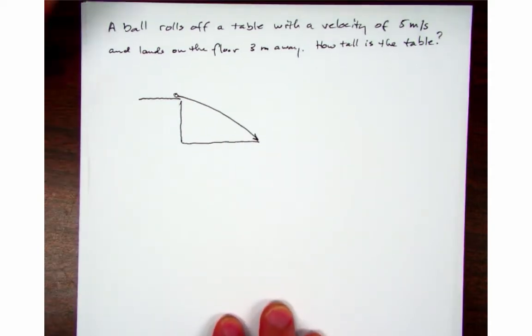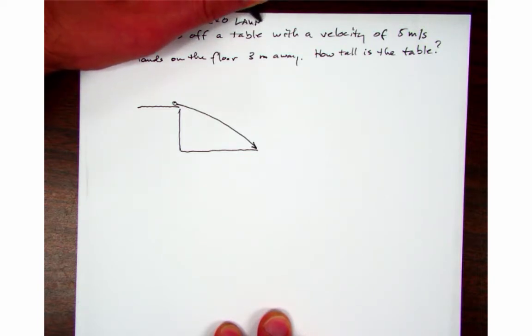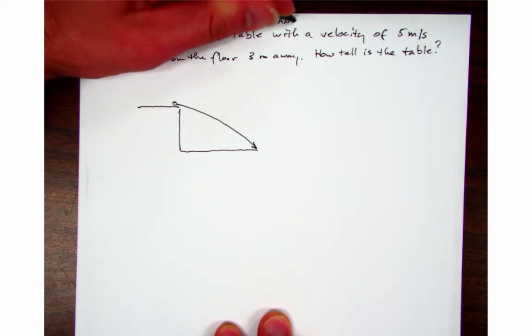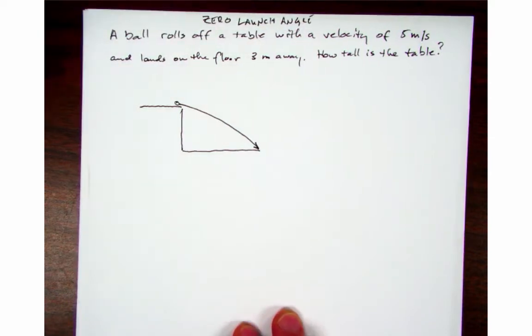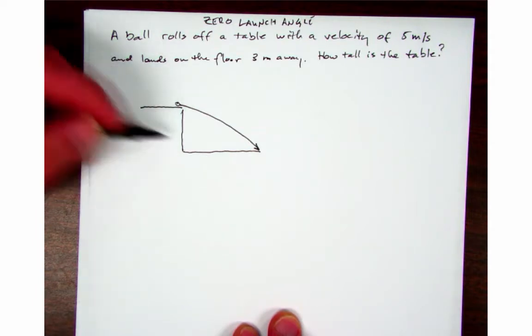All right, so we are going to do a zero launch angle problem here. The problem we're going to do today says that a ball rolls off a table with a velocity of five meters per second and lands on the floor three meters away. So how tall is the table?